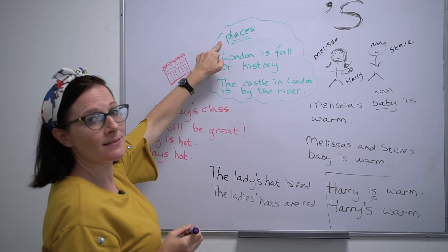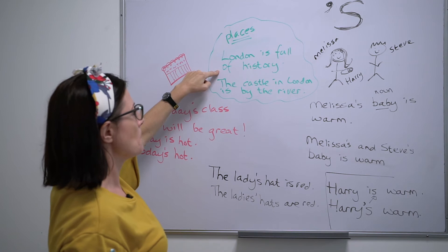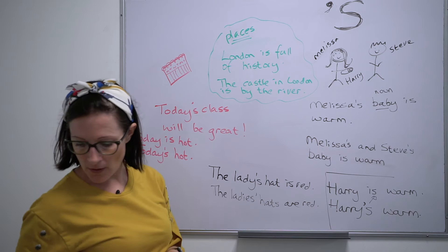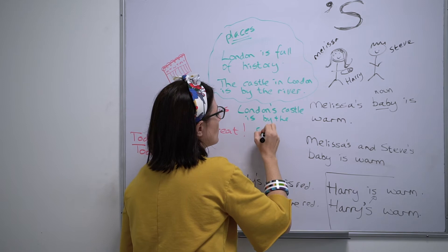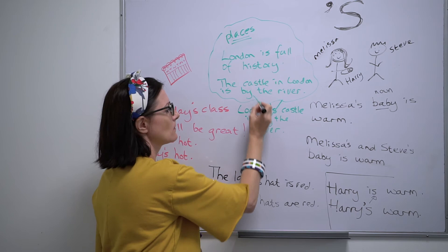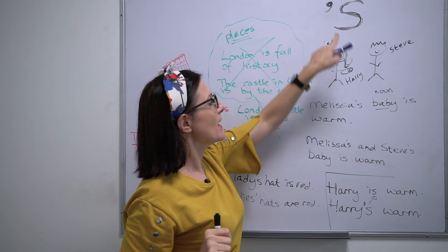You cannot use the apostrophe S when you're talking about places. For example, 'London is full of history' and 'The castle in London is by the river.' We wouldn't say 'London's castle is by the river' because London is a place. So we do not use the apostrophe S for places.